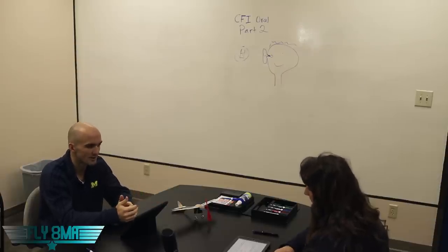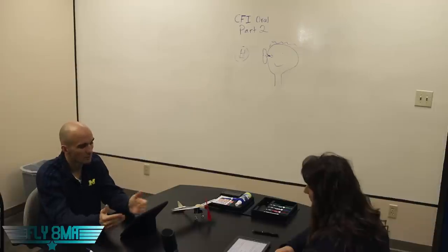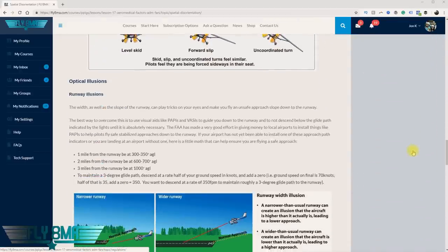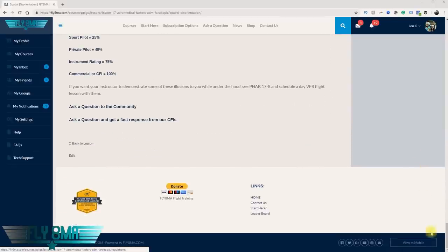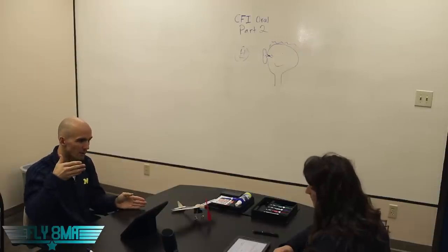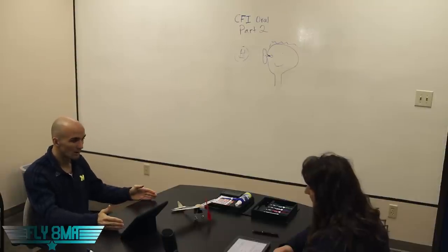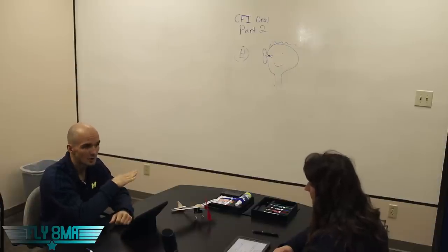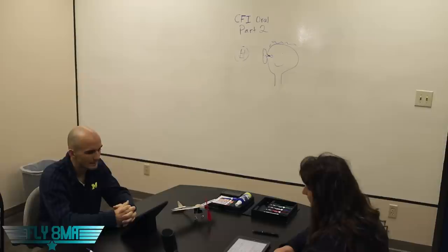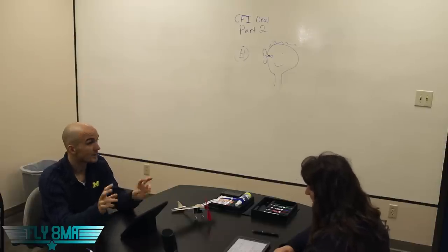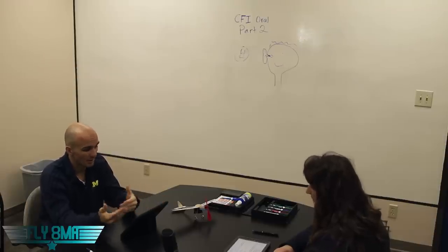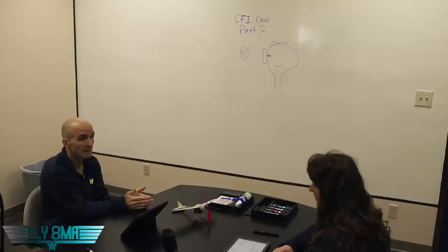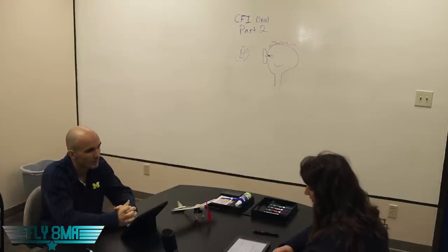In preparation for a spatial disorientation lesson, I'd assign homework and videos, then go through ground school together, review questions, and go fly. At night there are runway illusions — a very narrow runway makes you feel higher than you really are, so you might wind up lower than you want to be; a really wide runway makes you feel low. A downsloping or upsloping runway also affects your approach. You want to create scenario-based situations so students can recognize spatial disorientation moments and feel those experiences in the airplane, so they can identify them when out on their own.